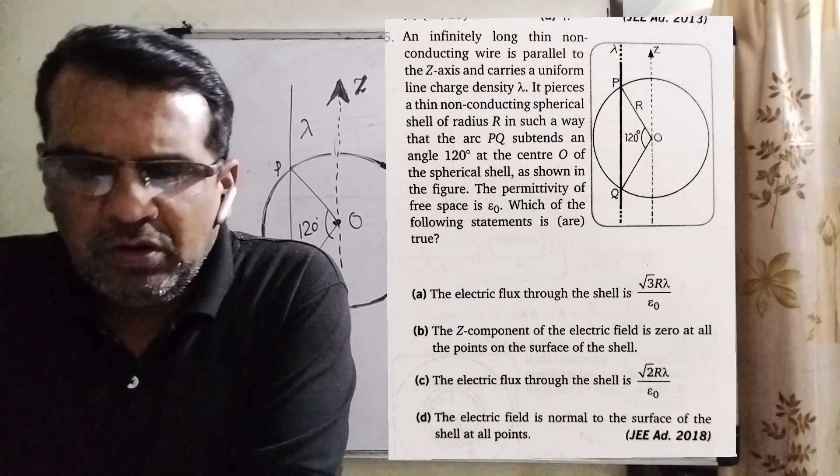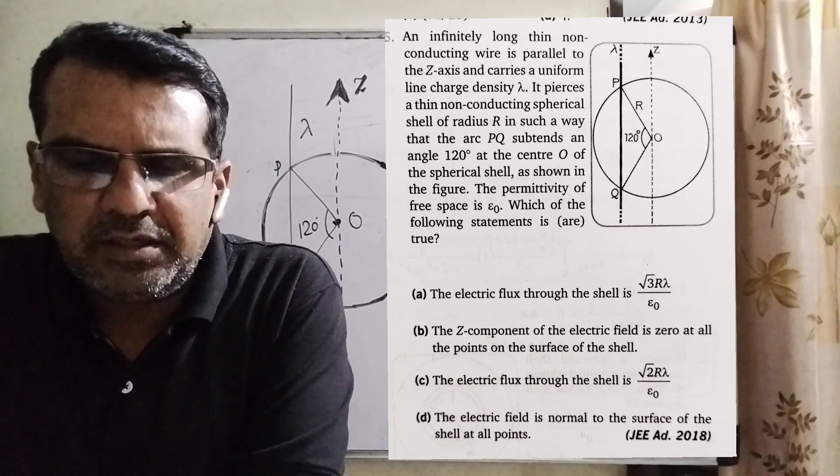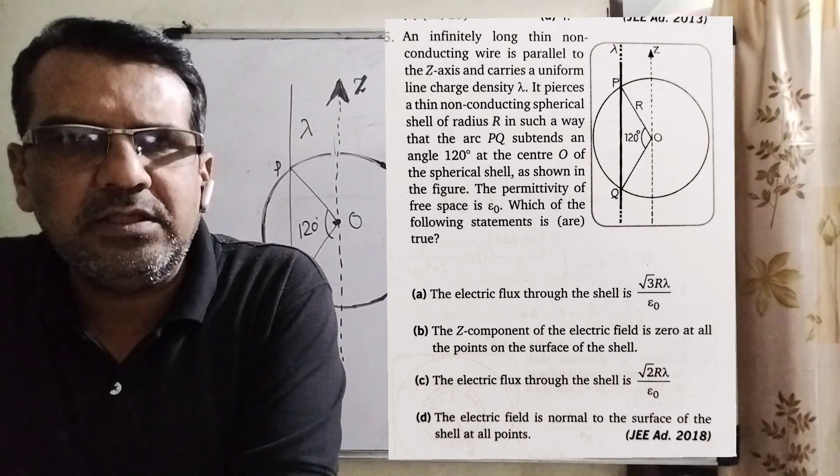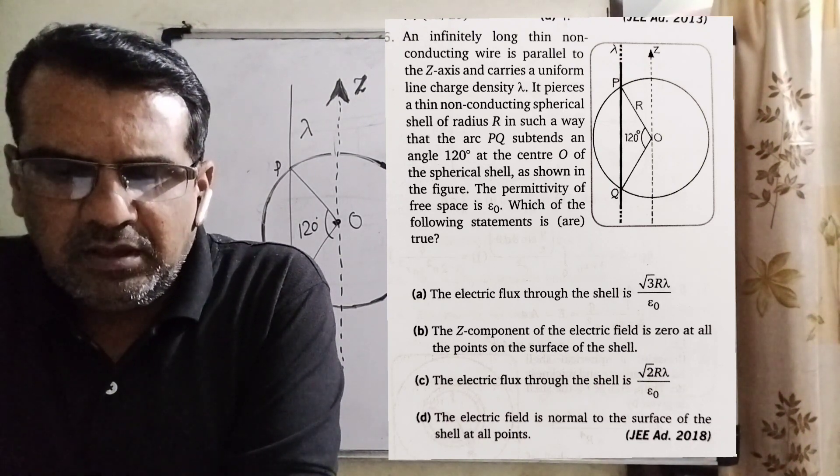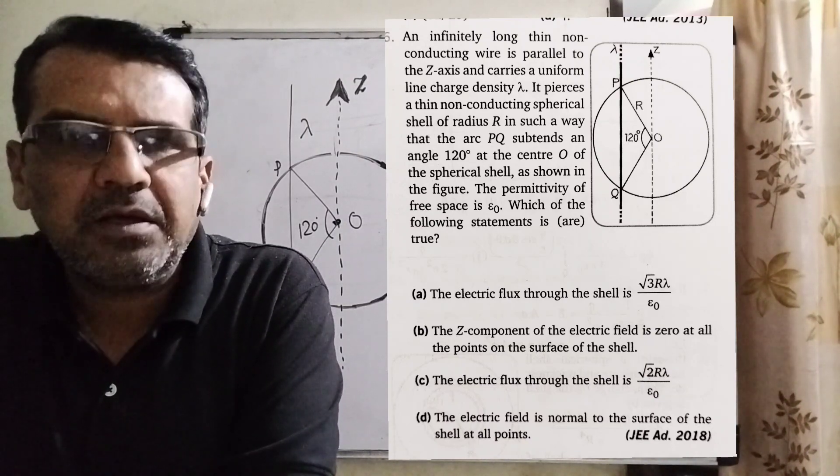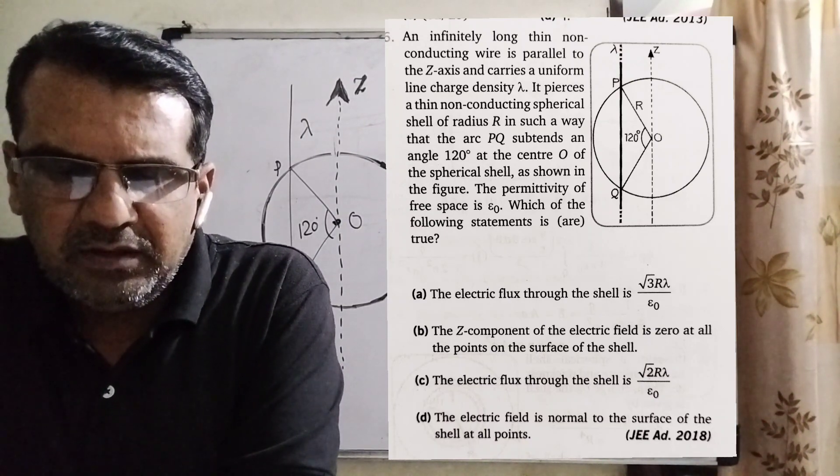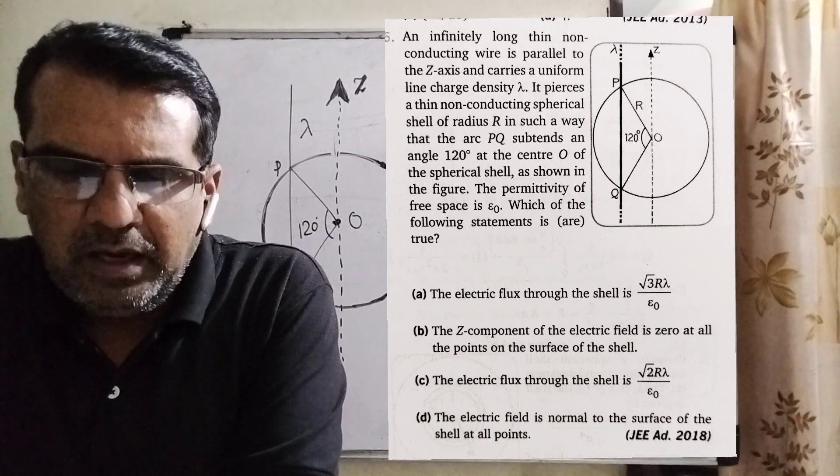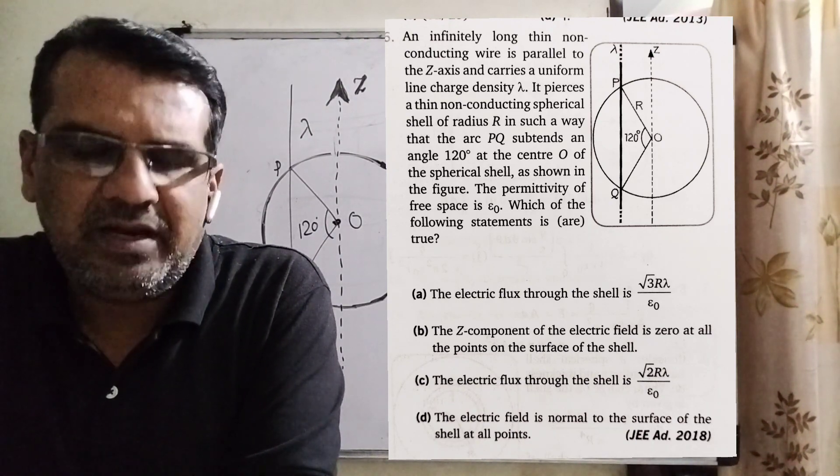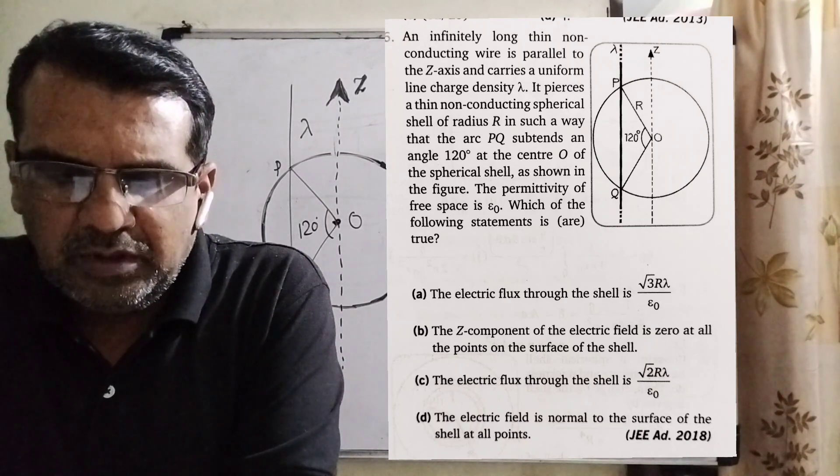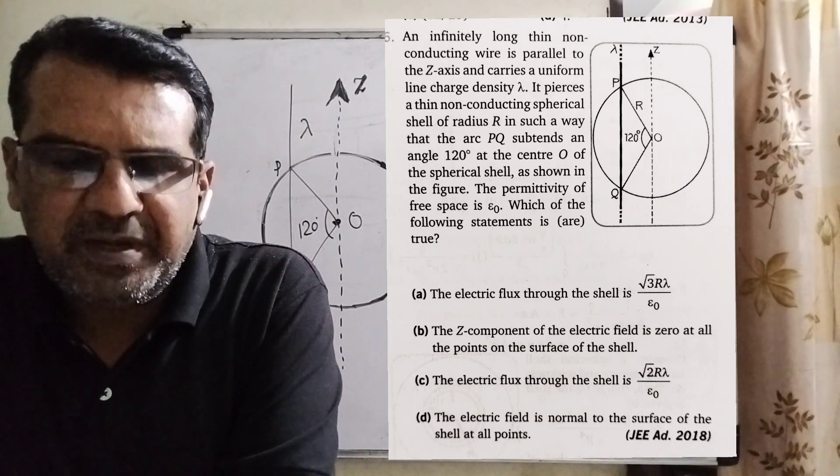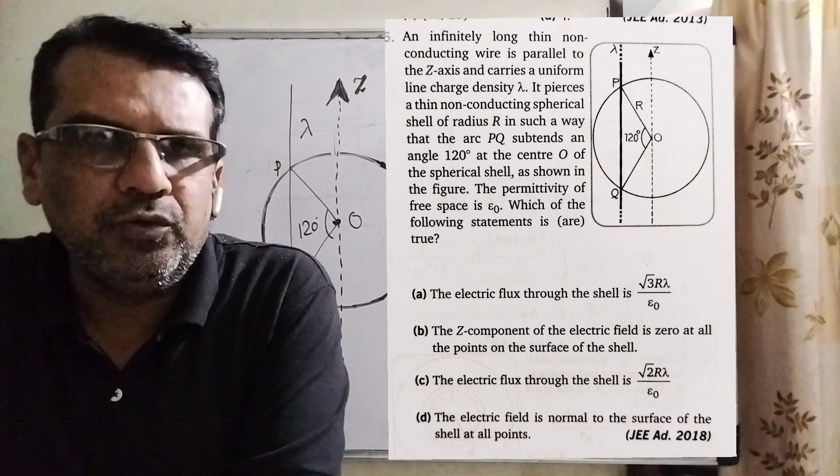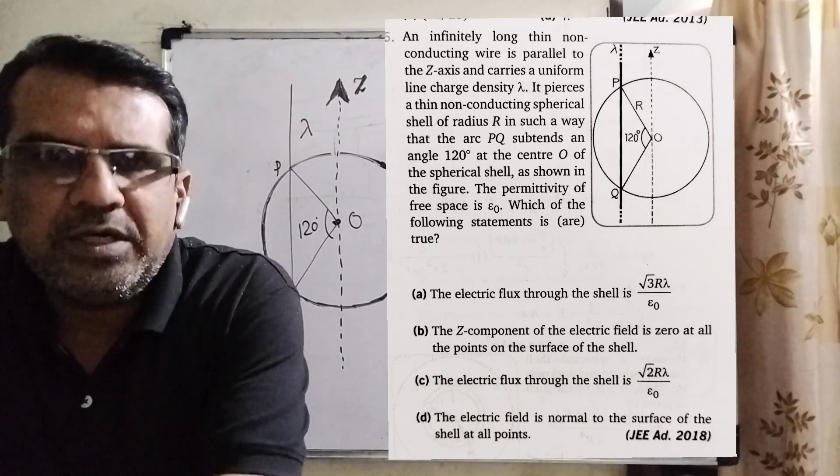Let's see what the question says. An infinitely long thin conducting wire is parallel to the z-axis and carries a uniform line charge density lambda. It pierces a thin non-conducting spherical shell of radius capital R in such a way that the arc PQ subtends an angle 120 degrees at the center O of the spherical shell. According to the figure, the permittivity of free space is epsilon zero.